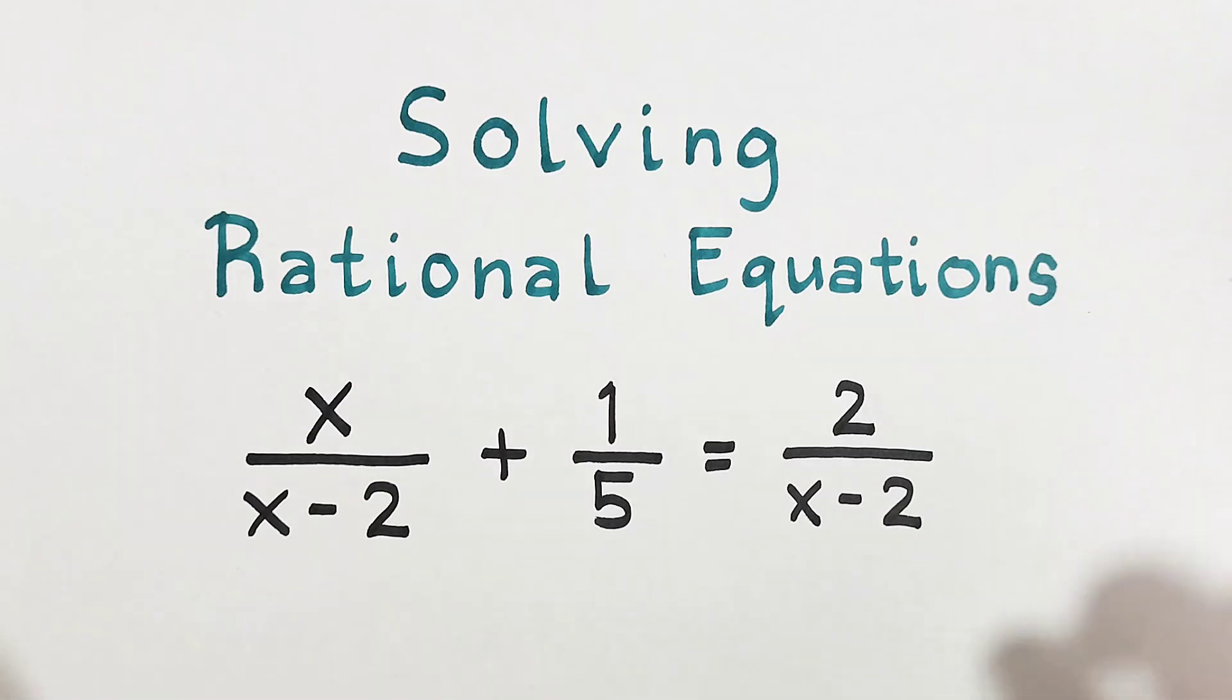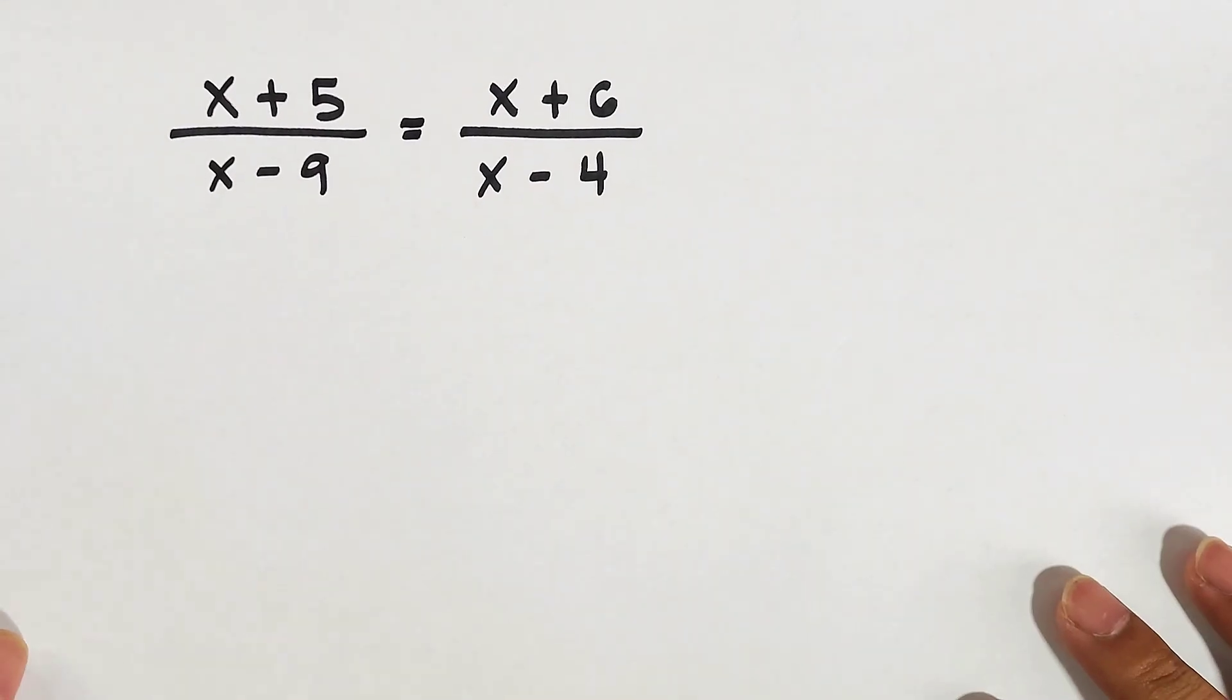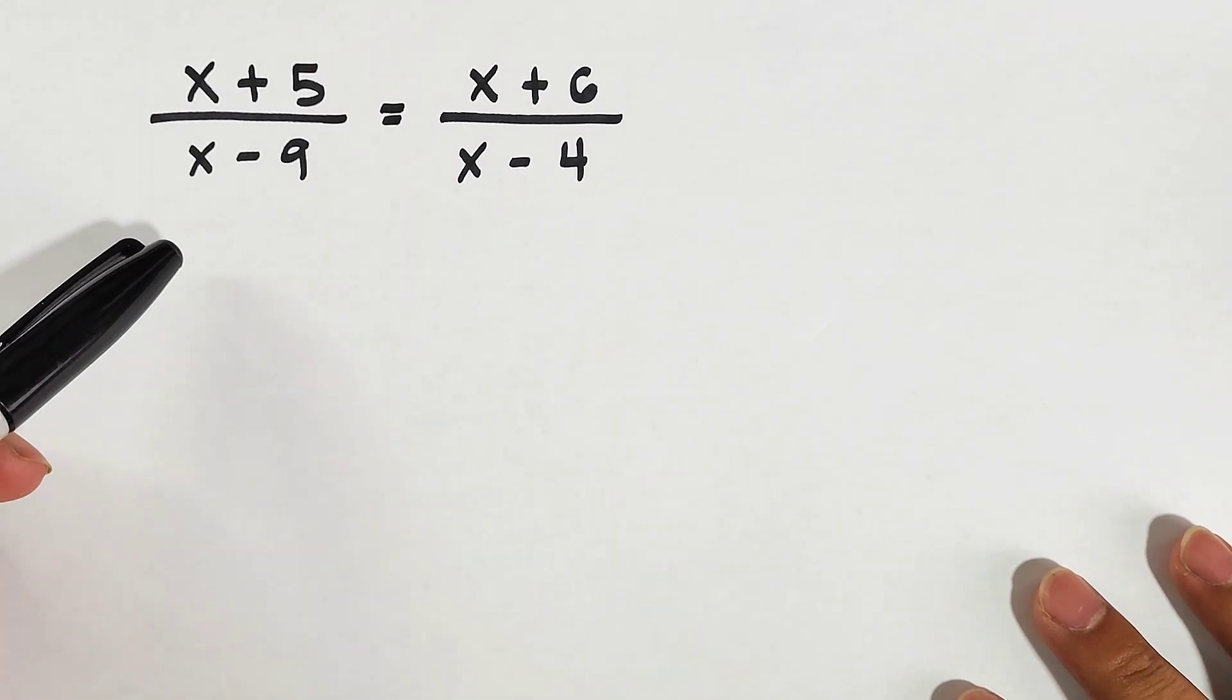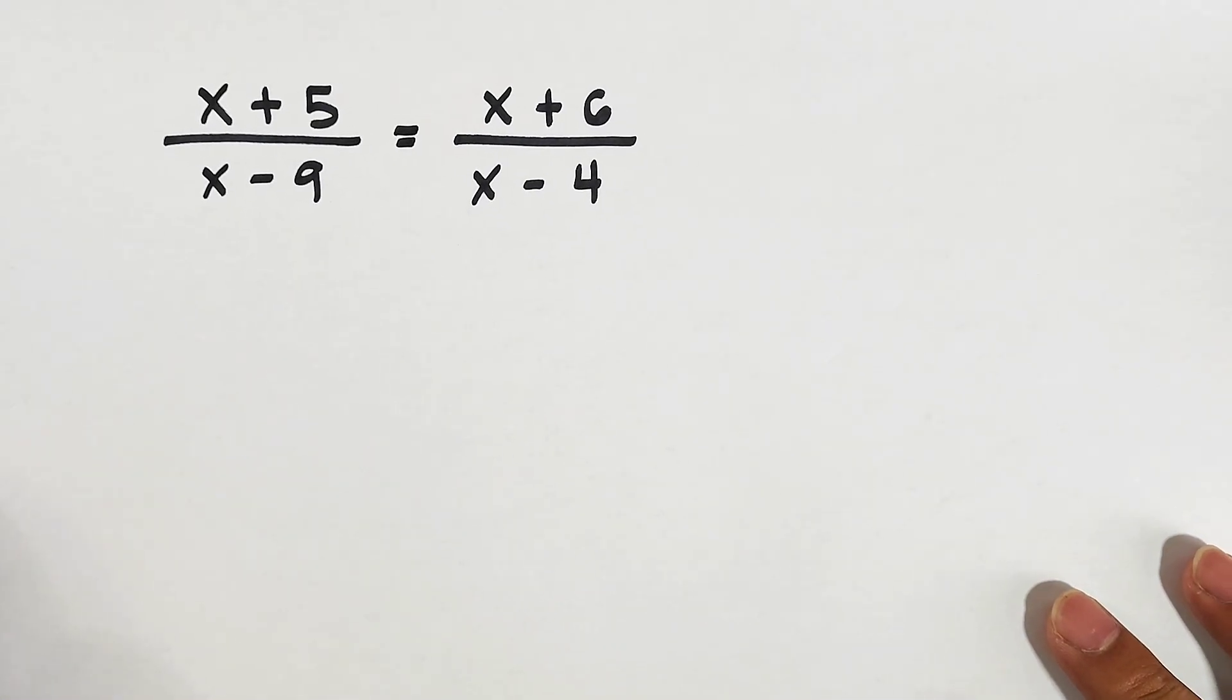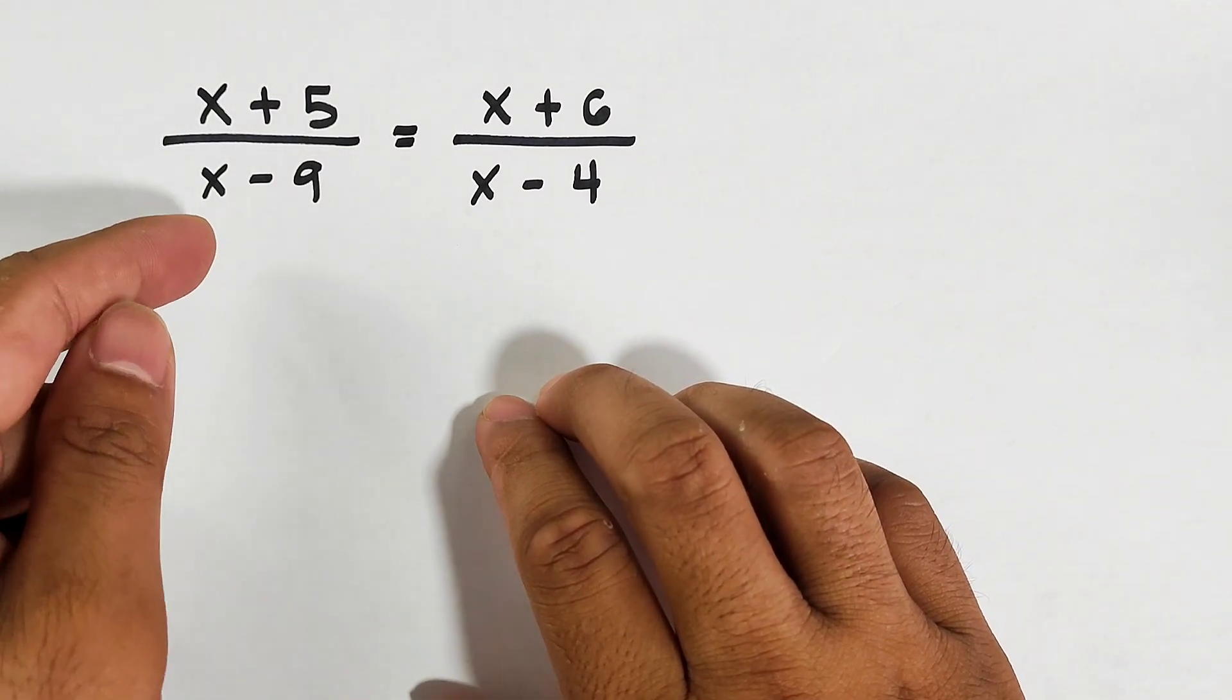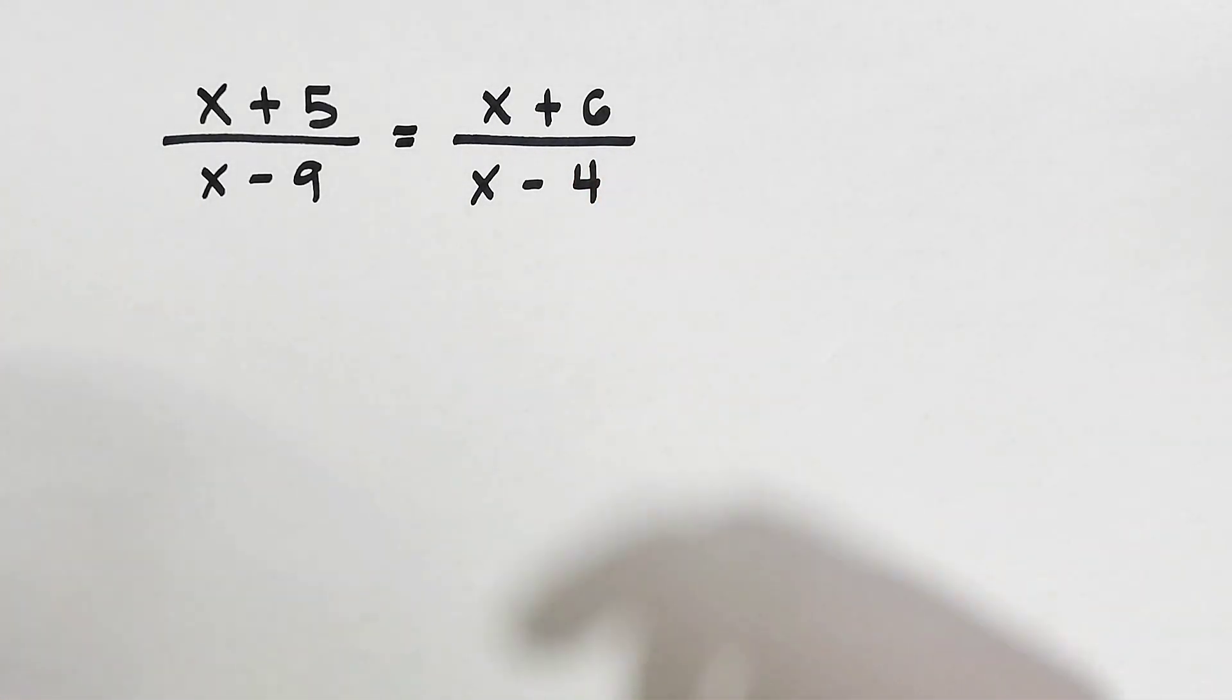So without further ado, let's do this topic. What we have here is the first example: the equation x plus 5 over x minus 9 is equal to x plus 6 over x minus 4. So what we have here is a rational equation.